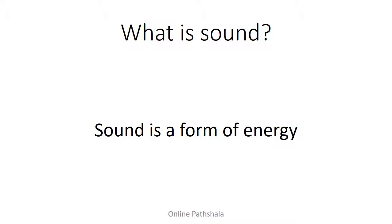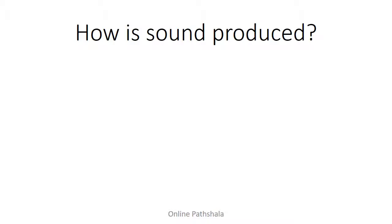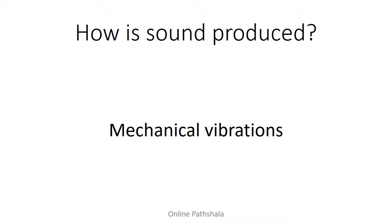Now the second question is: how is sound produced? It's quite simple — when we speak, sound is produced, or when we do some kind of tapping, plucking, or rubbing, sound is produced. To say generally how sound is produced, we say that sound is produced by mechanical vibrations. That is the key aspect. Let's try to understand this using examples.